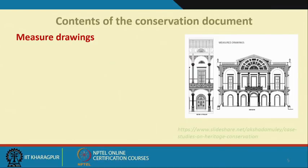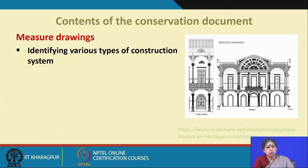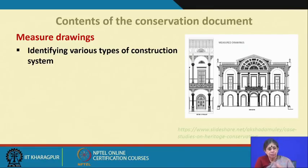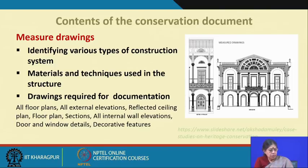Here are some examples of measured drawings taken from various sources, with references given. After the measured drawing, you have to work on it further — identifying the various types of construction systems, what the original construction system was, and whether there were some repairs. Each and every element and construction system has to be recorded. The materials used, the techniques, any changes in the structure over the years — all of these have to be recorded and supported with drawings.